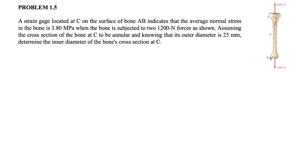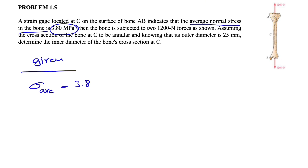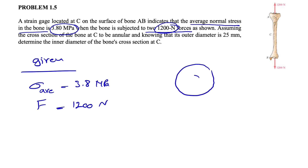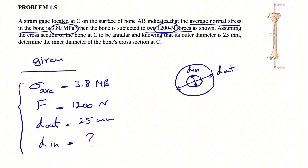Let's write down all the givens. The average normal stress in the bone is 3.8 megapascal. The bone is subjected to two forces of 1200 Newton, so F = 1200 N. The cross-section of the bone is annular — a hollow circle. The outer diameter, D_out, is 25 millimeter. And we have to figure out the inner diameter, D_in — that's what we need to find.